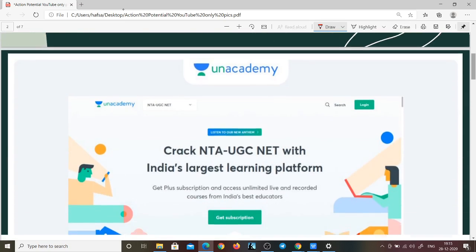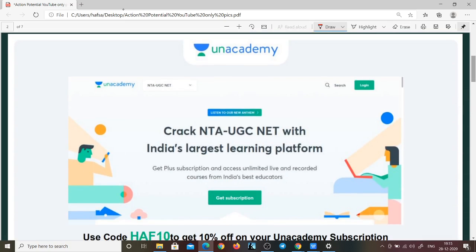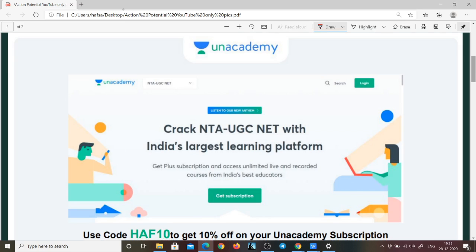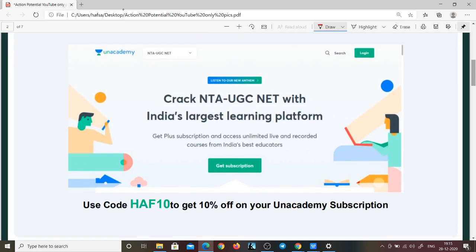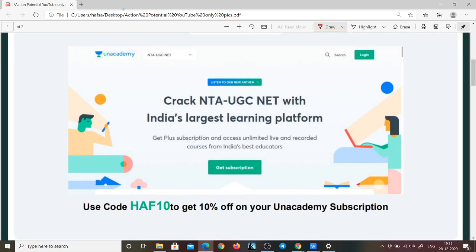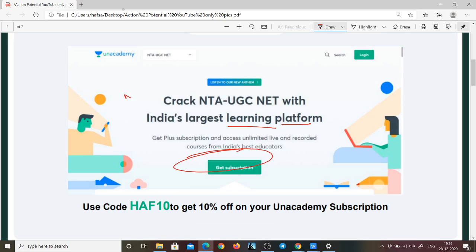Let's talk a little bit about Unacademy before we go on to talk about action potentials. Unacademy is definitely India's largest platform where you can learn for free and you can also choose to take a subscription if you like. If you are preparing for NET JRF and if you are preparing for GATE Psychology, you can do so with me.